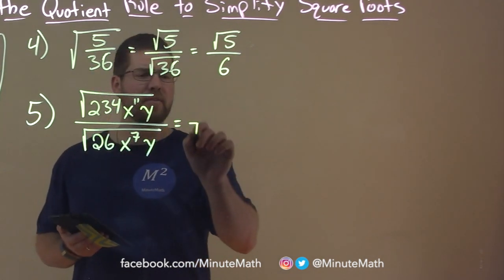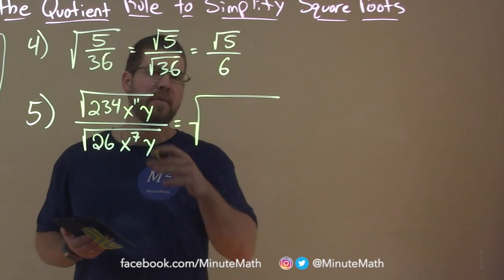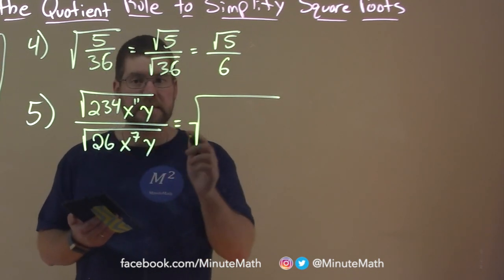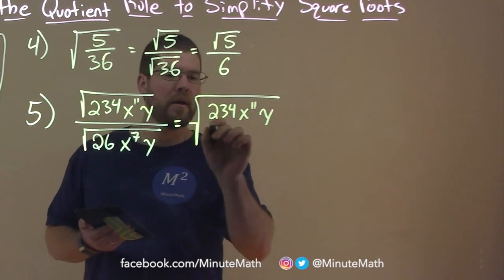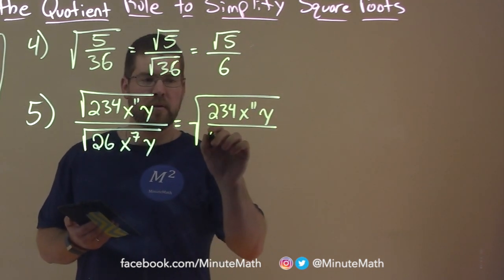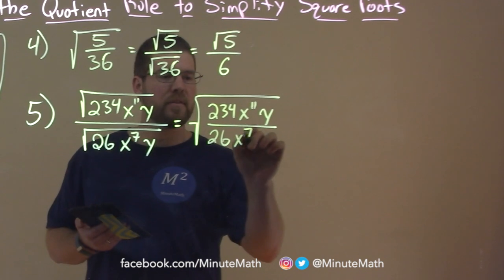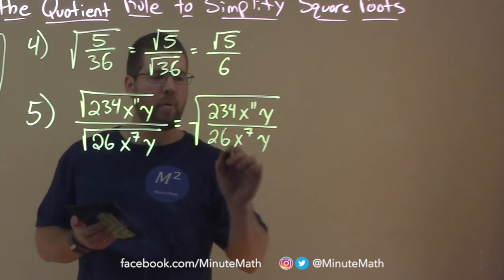So let's write this as one big square root, and the division is on the inside. We have 234, x to the 11th power, y, over the denominator, 26, x to the 7th power, y.